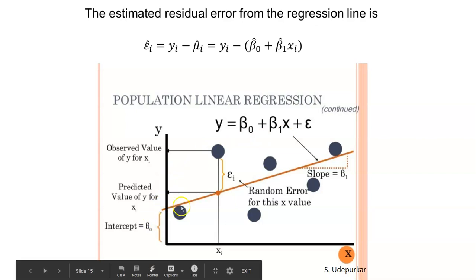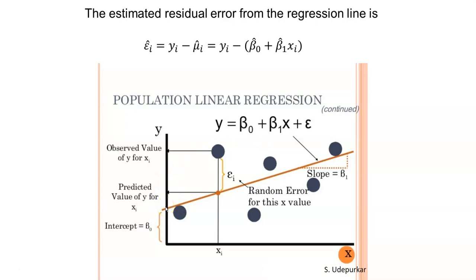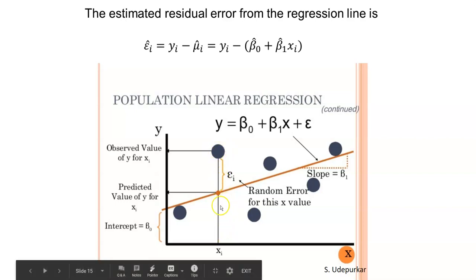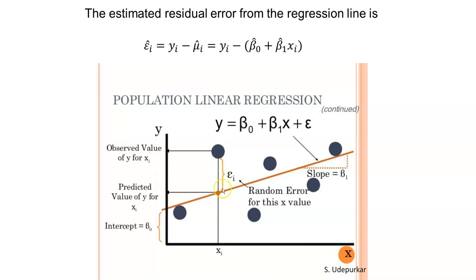We also have the intercept value for beta 0, where the line crosses the y-axis. We have some predicted value for y given x that might fall somewhere on the line. For this observation here, even though it predicts the value to be much lower than it is, the observed value of y given that x value is quite high. So we have some random error there in our regression. This is why it's important to understand where these data points fall relative to this line.